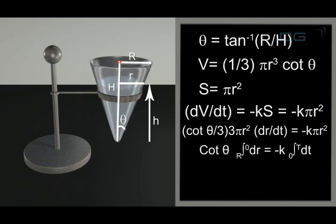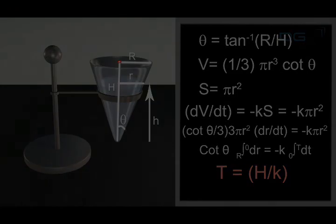Cot theta integral dr from r to 0 equals minus k integral dt from 0 to t, where t is the time required. This can be solved and finally we get t equals H upon k.